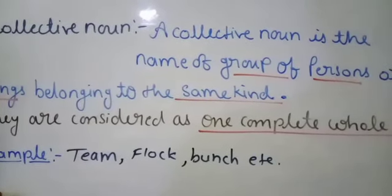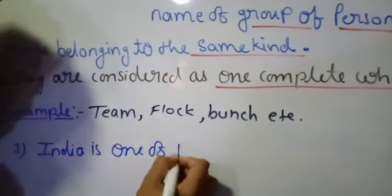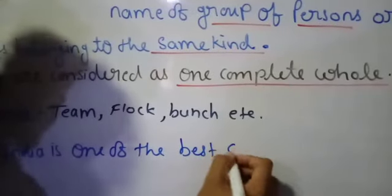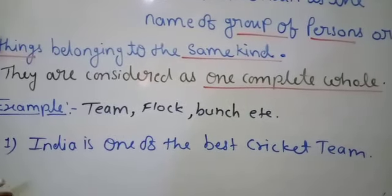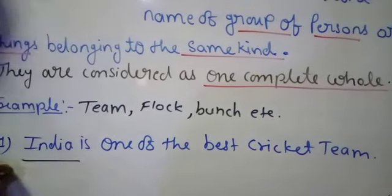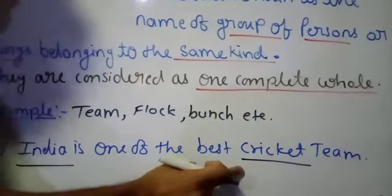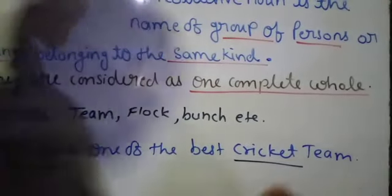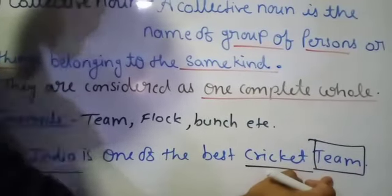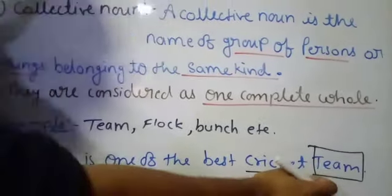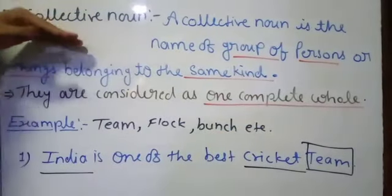For example: 'India is one of the best cricket teams.' Here, India is the name of a country — proper noun. Cricket is also a specific name of a type of game — also proper noun. But the word 'team' means all 11 people of the team come together and are called a team. So this is called a collective noun. When a single word stands to make a complete whole, that is called a collective noun.